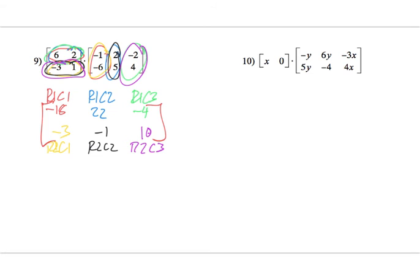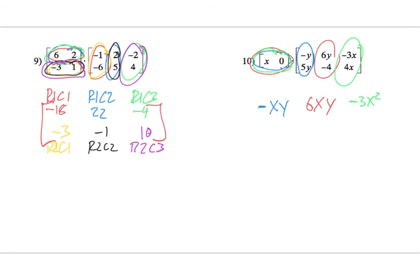We have one more multiplication. This is going to be one row each time. First column: −xy plus 0 — every remaining term is 0, so that's nice. Second column: 6xy and then 0. Third column: −3x² and then 0. Since we don't have a second row to add, this is our final multiplied matrix.